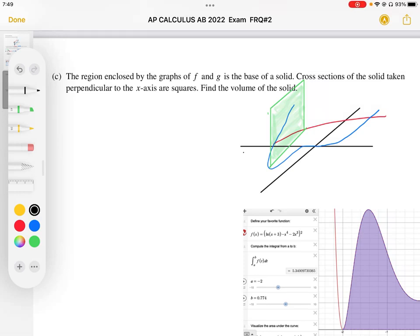Part C. The region enclosed by the graphs of f and g is the base of a solid. The cross sections of the solid taken perpendicular to the x-axis are squares. So that's what I've drawn here in green.